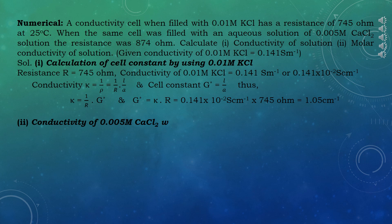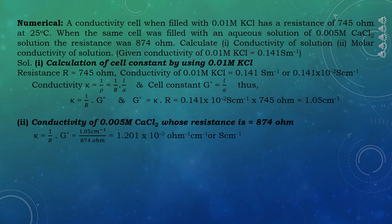For 0.005 molar calcium chloride, resistance is 874 Ohm. Using κ equals cell constant / R, we get κ equals 1.05 / 874, which comes out to be 1.201 × 10⁻³ Siemens per cm. Then molar conductivity λM equals κ × 1000 / molarity equals 1.201 × 10⁻³ × 1000 / 0.005, which comes out to be 240.2 Siemens·cm² per mol.